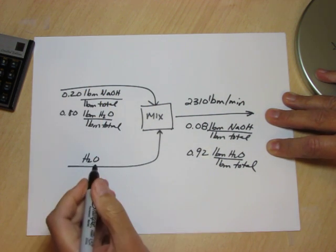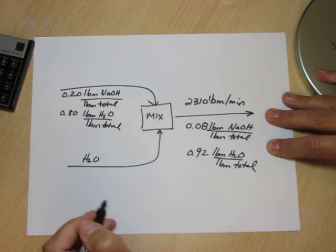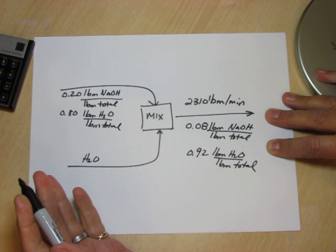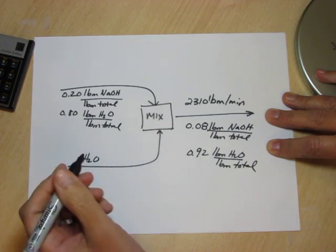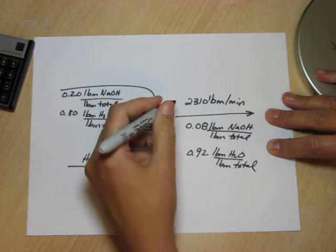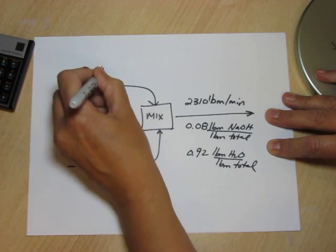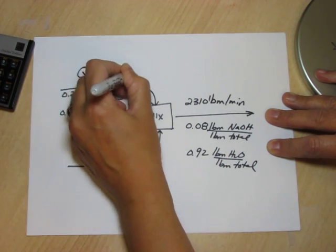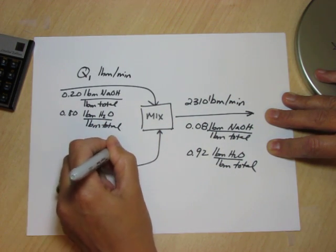We don't know the flow rate of this stream. We don't know the flow rate of this stream although we do know it's pure water. And we're ready to start. Now the principle that we're going to use to solve the problem is that mass is conserved. So we're going to need some names here to be able to do the mass balances. I'm going to call this stream Q1 lb/min total of the stream, and I'll call this Q2 lb/min.